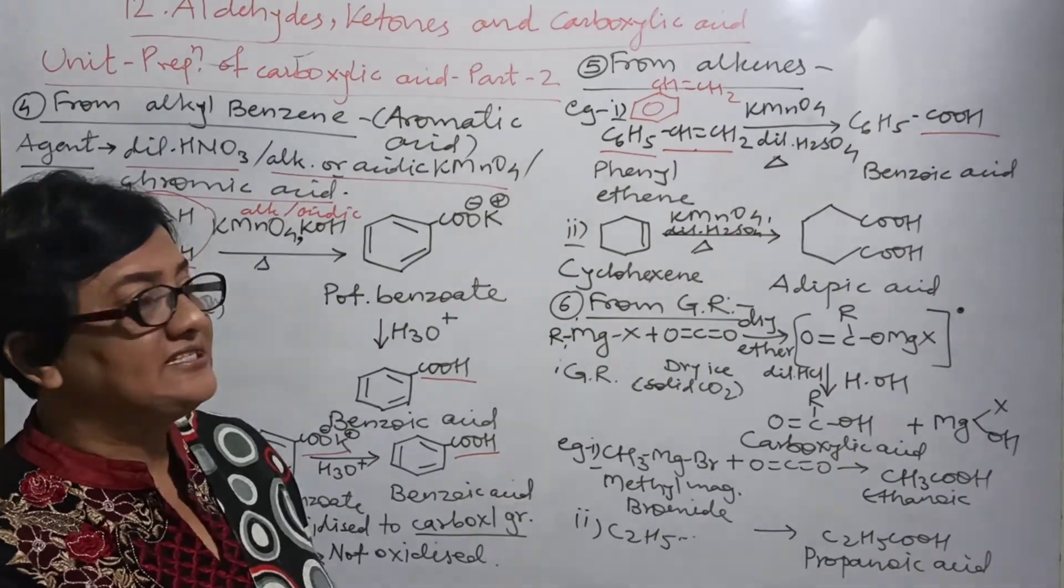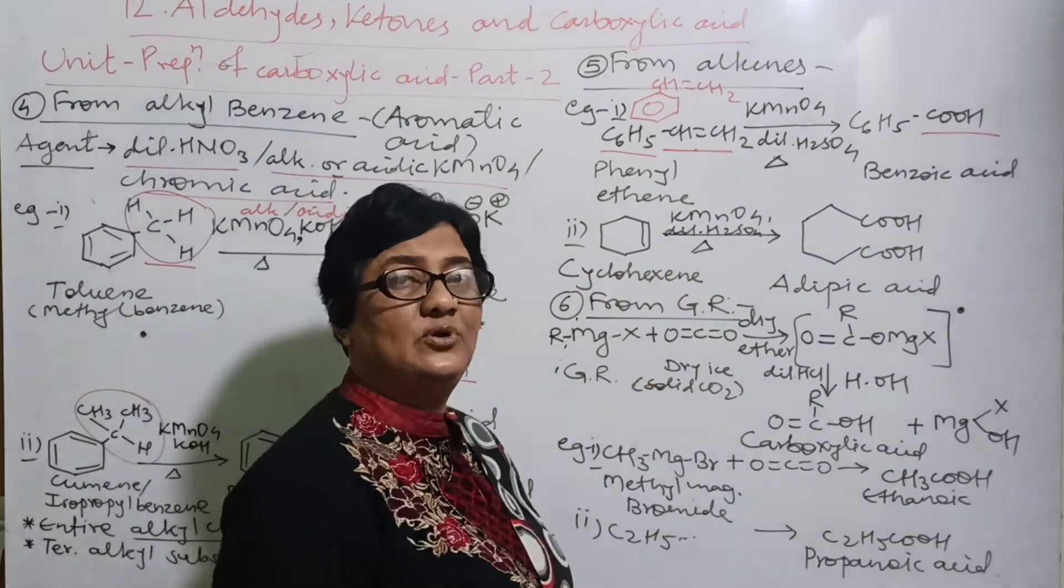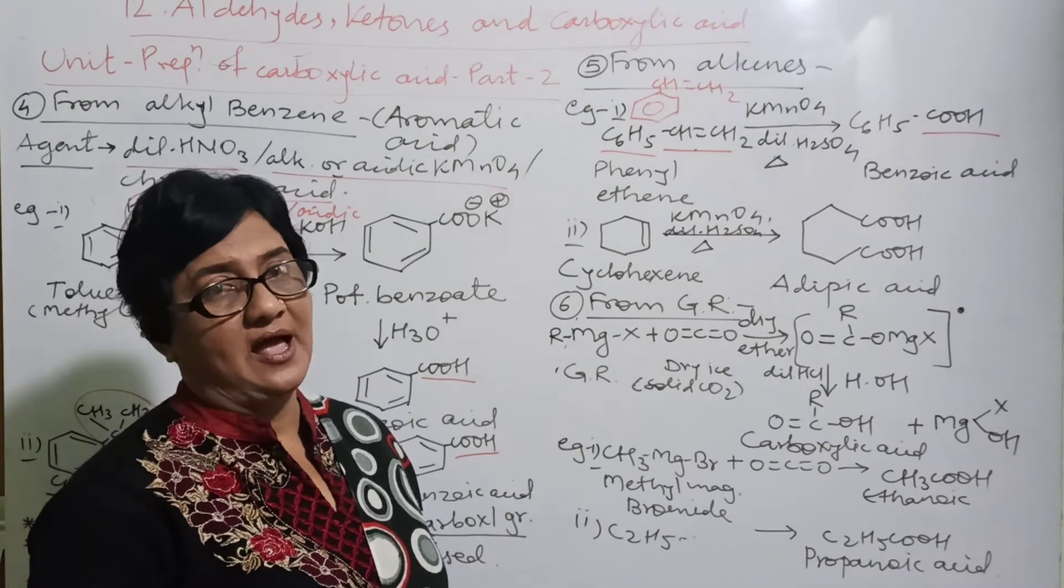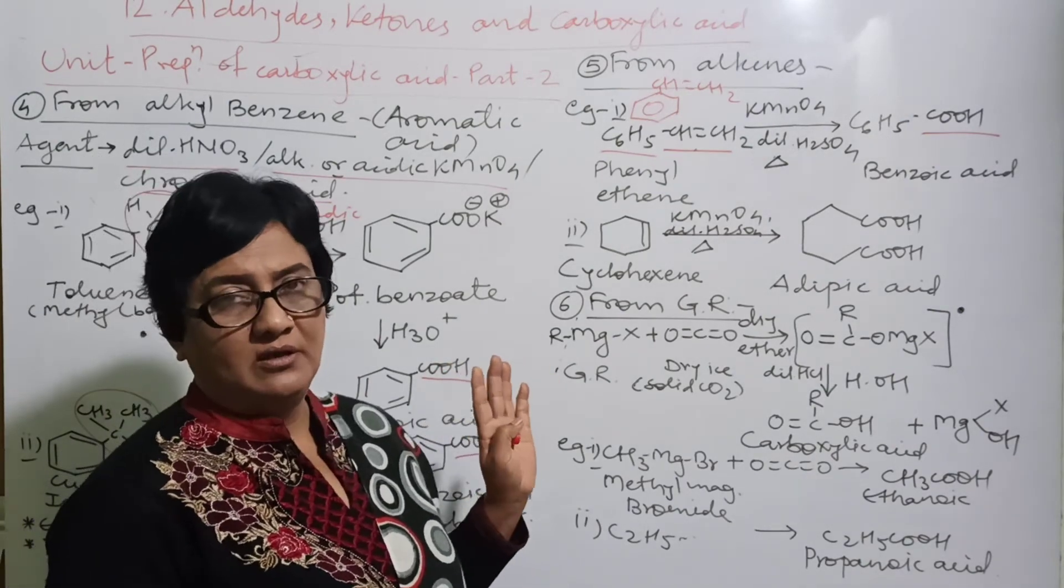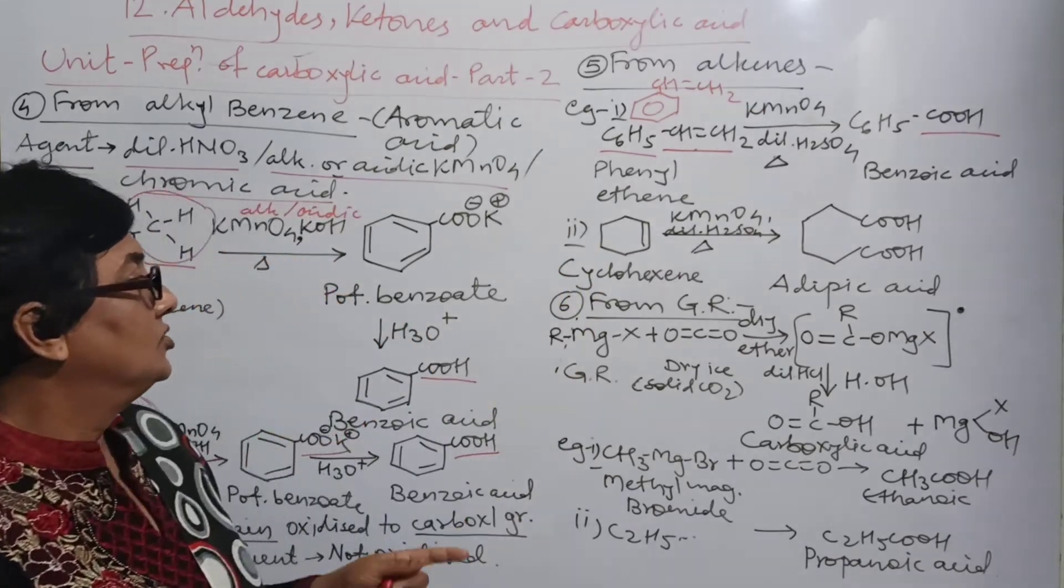If aliphatic alkyne is given, for example CH3-C triple bond CH2, that is propyne, can be converted into CH3-COOH, that is ethanoic acid. Such reactions can be asked, but in your book the scope and limitation is only these two reactions are given.